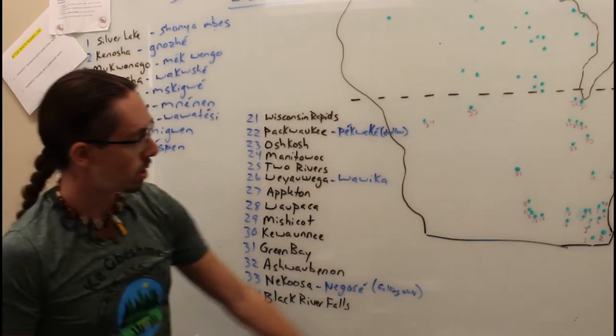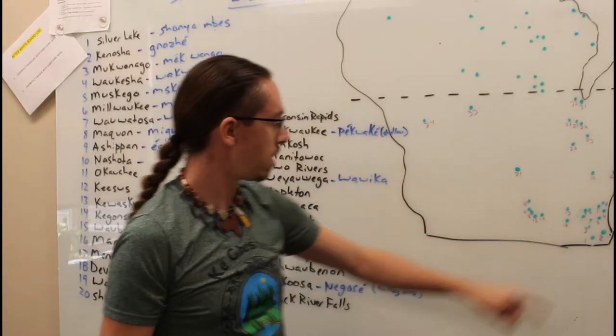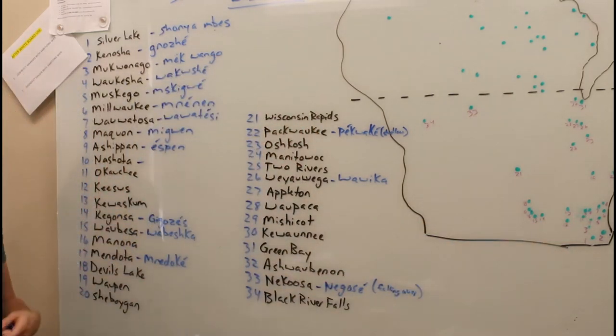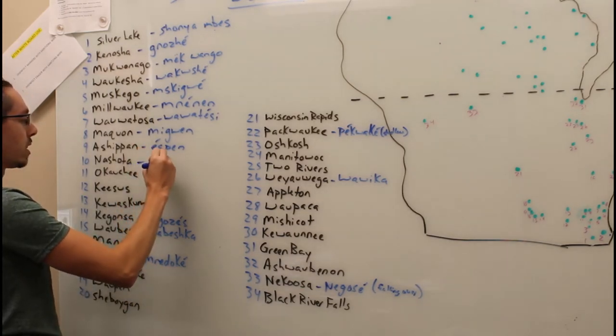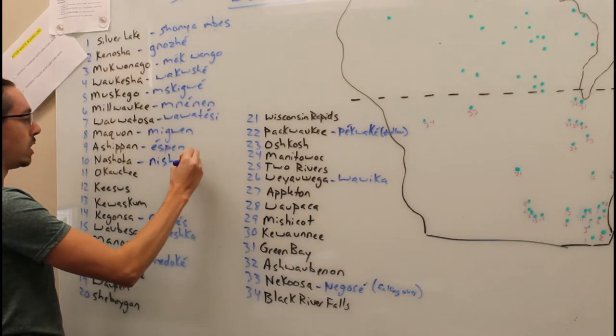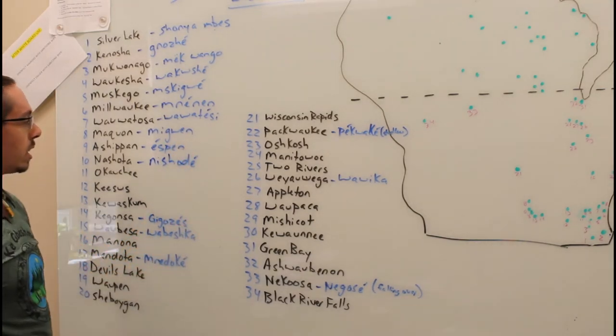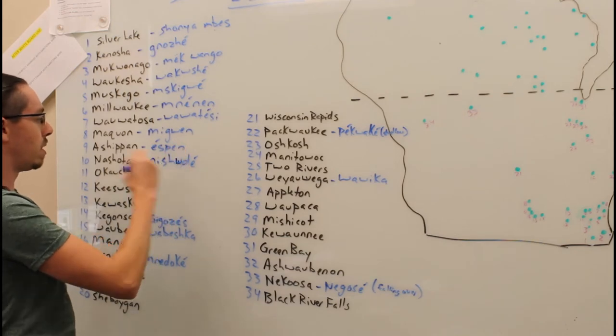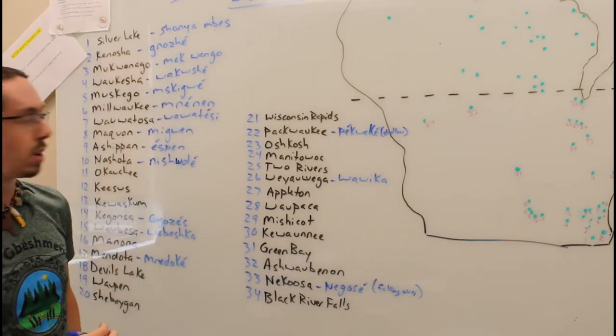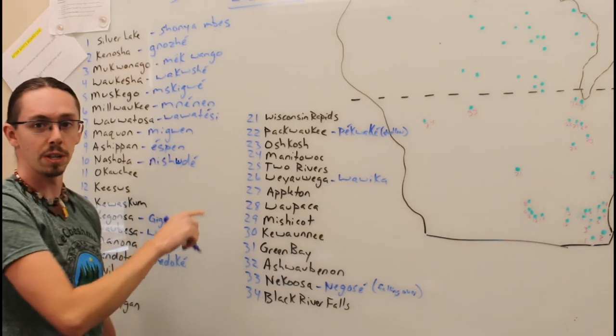Next one, just next to there, you have Nashotah, Wisconsin, which is actually Nizhode. And that means twins, two hearts.